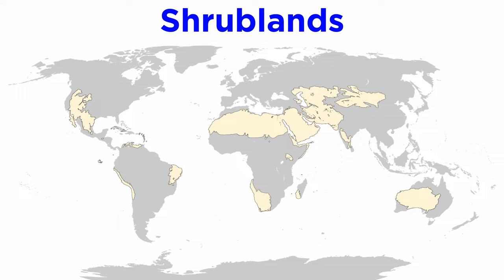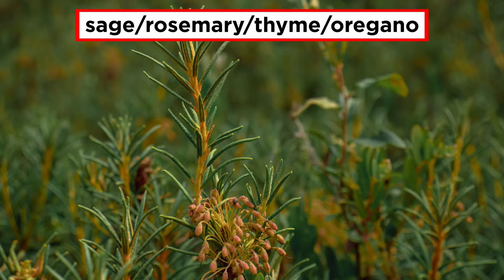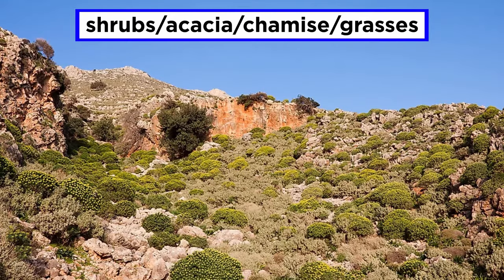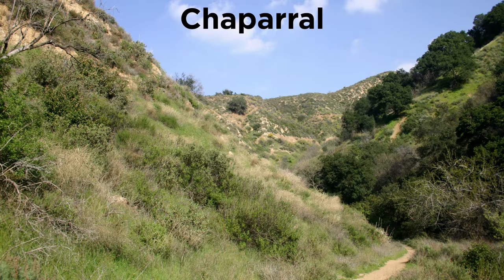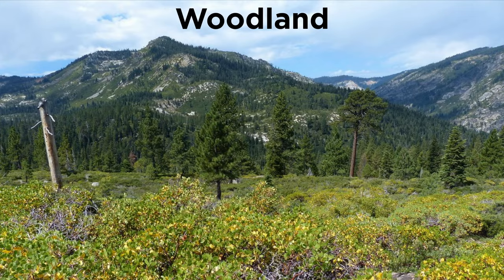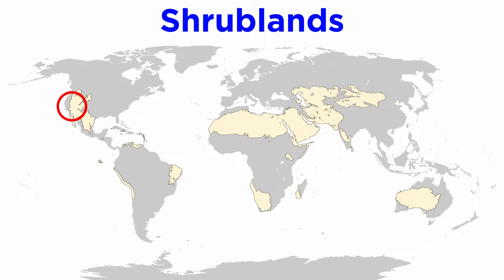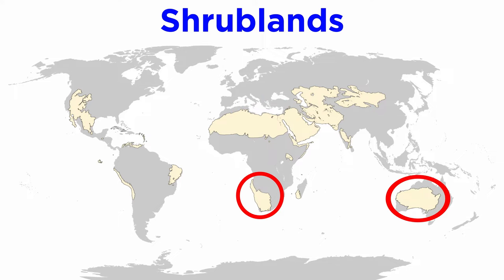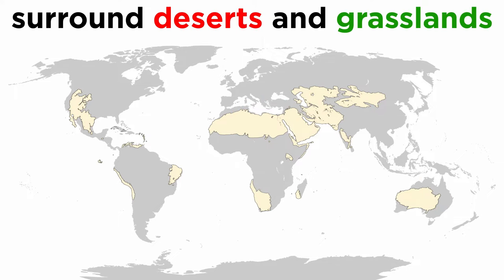Next up are the temperate shrublands, found in west coastal regions between 30 and 40 degrees north and south of the equator. Here we find aromatic herbs like sage, rosemary, thyme, and oregano, as well as shrubs, acacia, chemise, and grasses. Shrublands include regions such as chaparral, woodland, and savanna. Some examples can be found in southern California, Chile, Mexico, areas surrounding the Mediterranean Sea, and southwest parts of Africa and Australia. These regions are usually found surrounding deserts and grasslands.